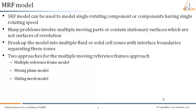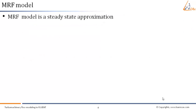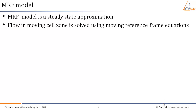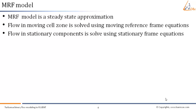In this lecture we will discuss the multiple reference frame model and the mixing plane model. The MRF model is a steady-state approximation. Individual cell zones can be assigned different rotational and translational speeds. Flow in a moving cell zone is solved using the moving reference frame equations. Whenever the zone is stationary, the equations revert to the stationary frame equations. In between there is an interface. At the interface, a local frame transformation is performed to enable flow variables in one zone to be used to calculate fluxes at the boundary of the adjacent zone.